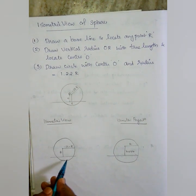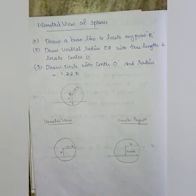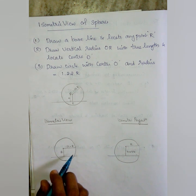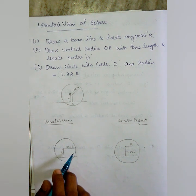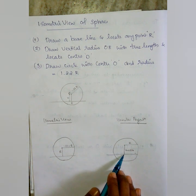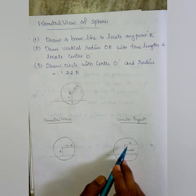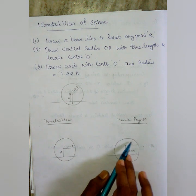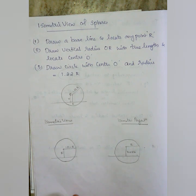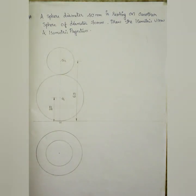In the isometric view, we have the base line, a center point, and the radius located. Then R into 0.816 is used for isometric projection, and the circular rendering gives us the isometric projection and isometric view.